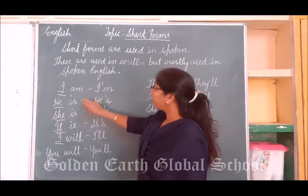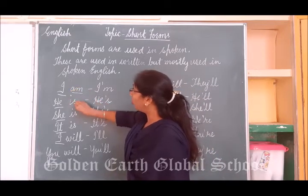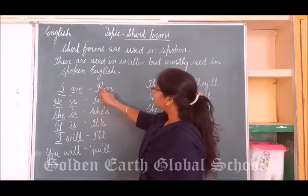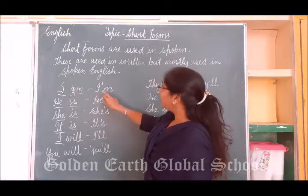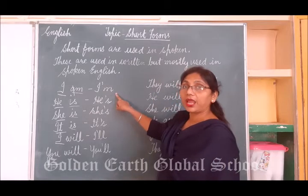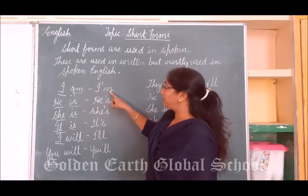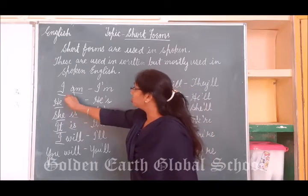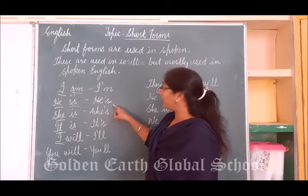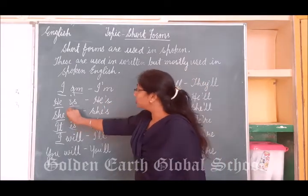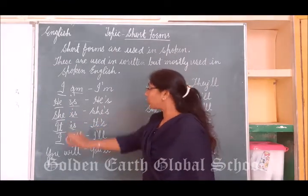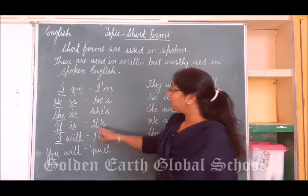We are going to look at all these helping verbs. 'I am' — how would we write it? We will drop the 'a' and instead put an apostrophe, then write 'm' only — so 'I am' becomes 'I'm'. 'He is' — drop the 'i' and write it as 'he's'. 'She is' — drop the 'i', it becomes 'she's'. 'It is' — drop the 'i', it becomes 'it's'.